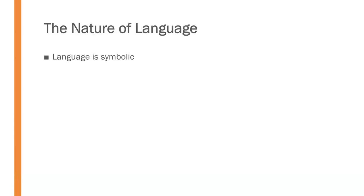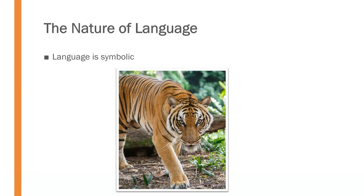For example, when we see the letters T-I-G-E-R put together consecutively, we understand that it spells tiger, and further, that it's referring to this big jungle cat.